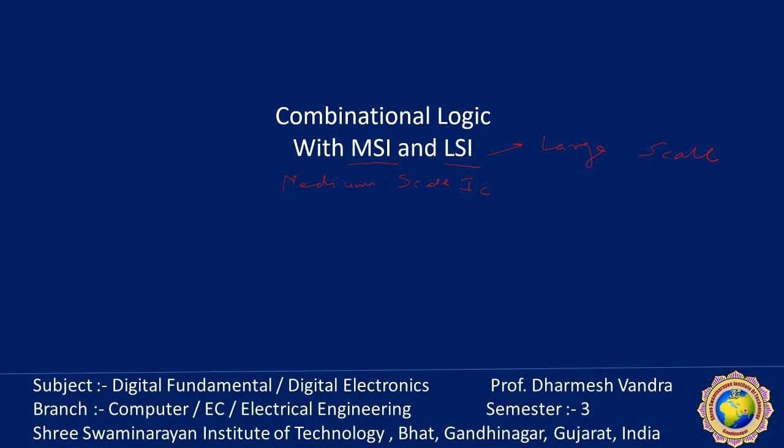There are numerous occasions where the classical method will not produce the best combinational circuit for implementing a given function. The truth table and simplification procedure become tedious when the number of inputs is extremely large, and the final circuit obtained is implemented with a random connection of SSI — small scale integration — where the number of gates is less than 10 in one small package. In many cases, the application of an alternate design procedure can produce a combinational circuit that is far better than the one obtained following the classical design method.